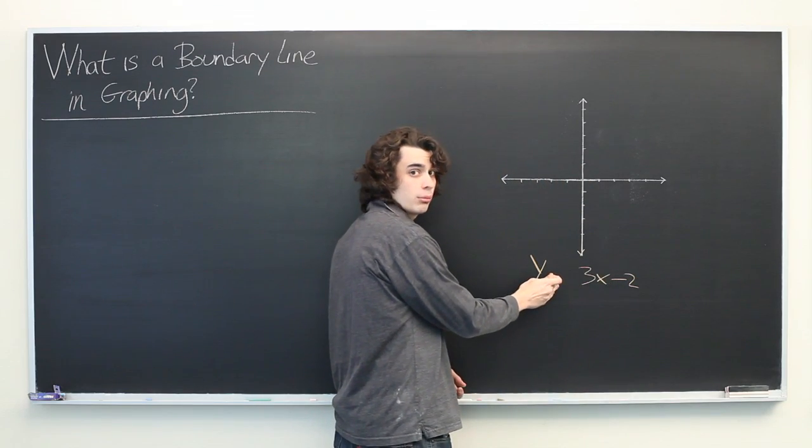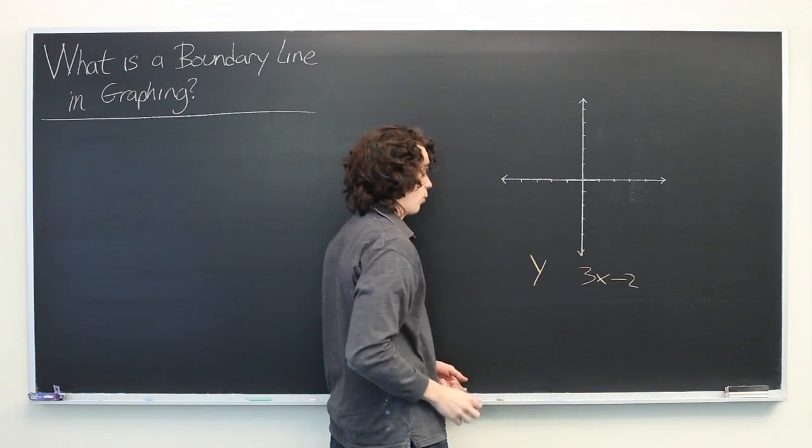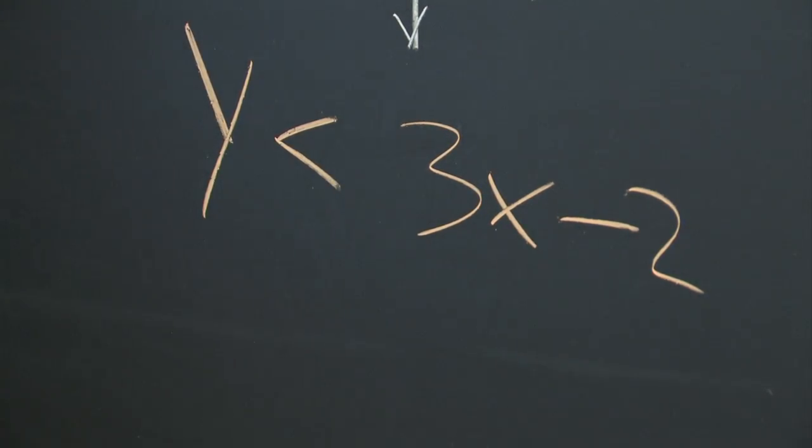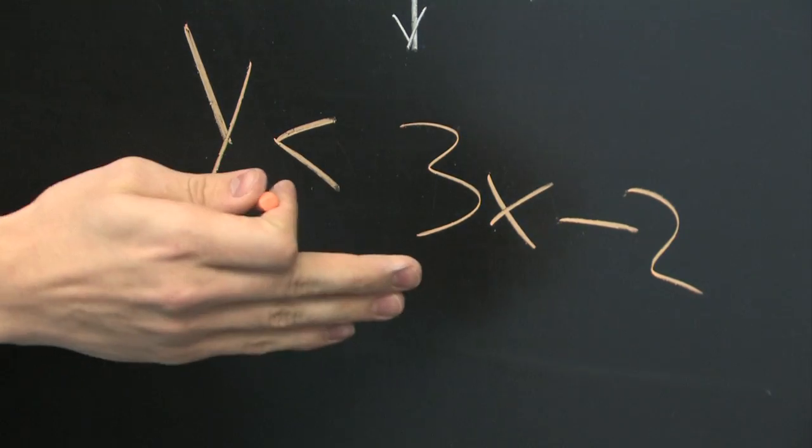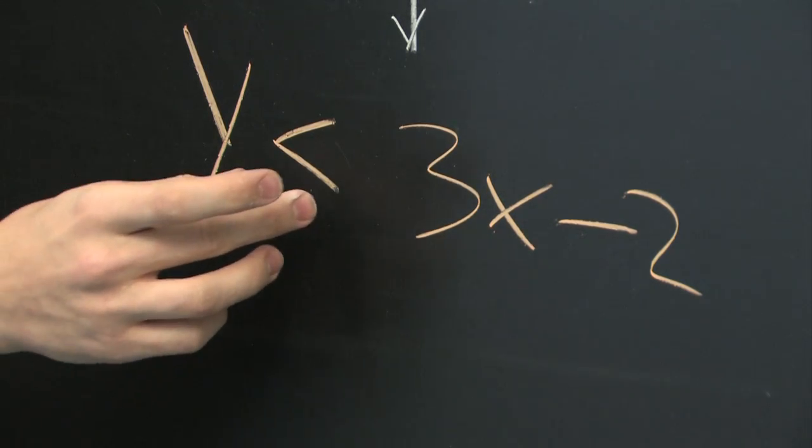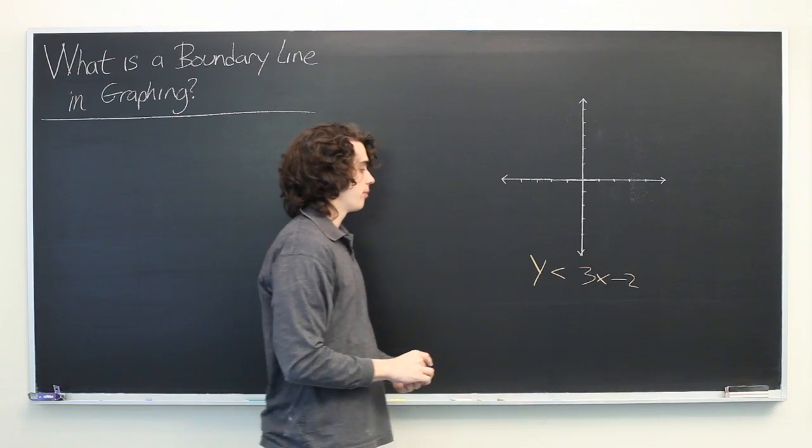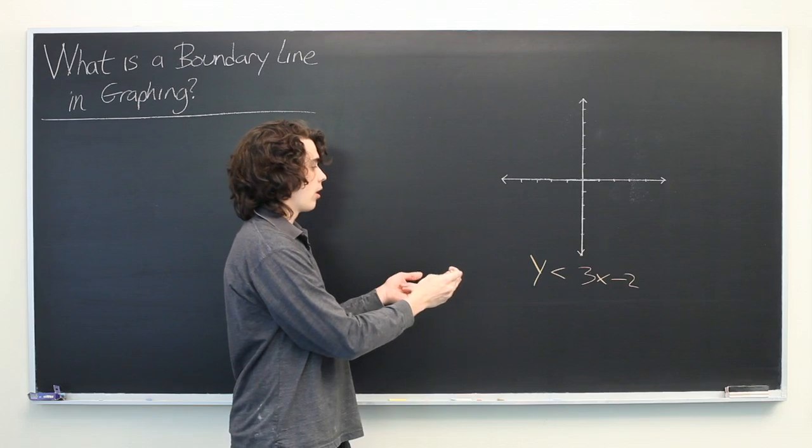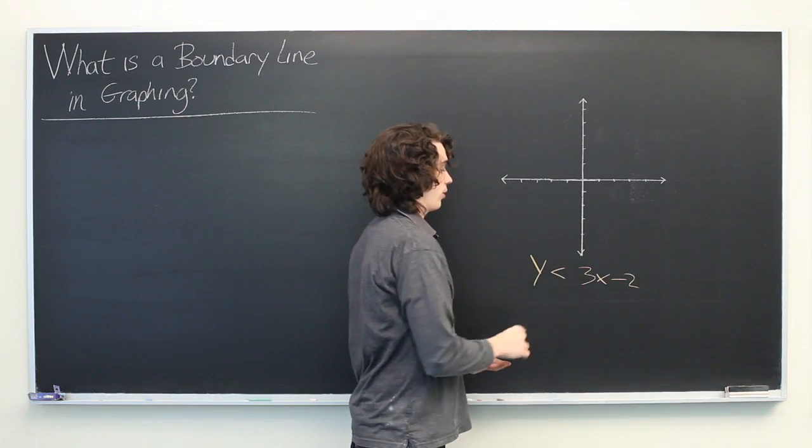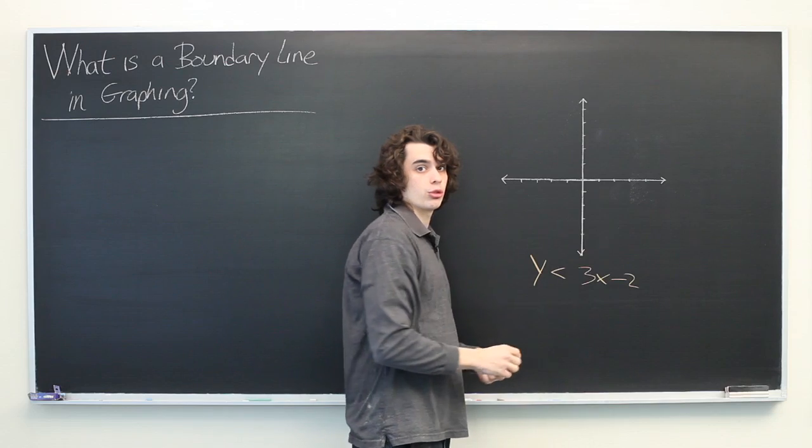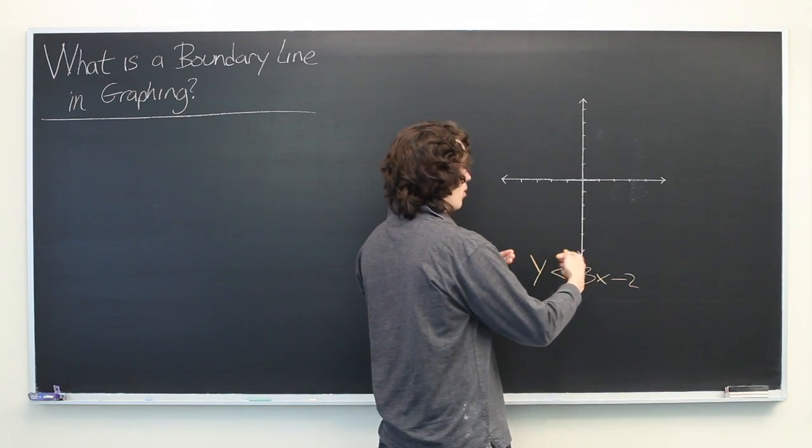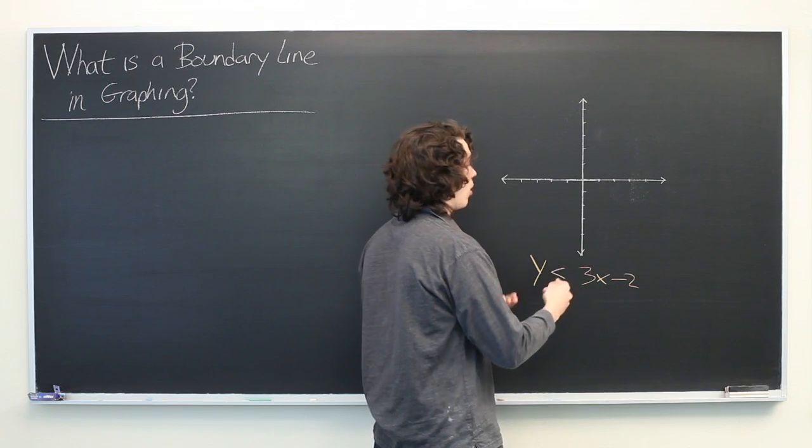Instead of writing an equal sign between the left side and the right side of the equation, we're going to use an inequality, which means that this is true any time y is less than 3x-2. So, the graph of this will include all pairs of y and x coordinates for which this statement is true. And the boundary line comes into play when we just graph what this would look like if it were an equality.